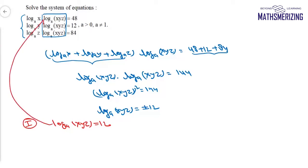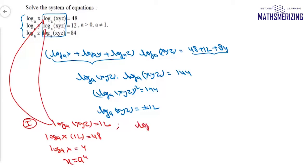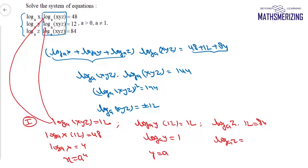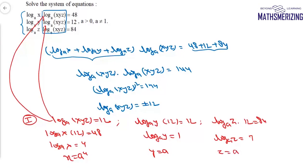In Case 1, taking log_a(xyz) equals 12: substituting into the first equation gives log_a(x) equals 4, so x equals a to the power 4. The second equation gives log_a(y) equals 1, so y equals a. The third equation gives log_a(z) equals 7, so z equals a to the power 7. One solution is x = a⁴, y = a, z = a⁷.